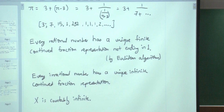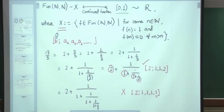Every rational number has a unique finite continued fraction expansion not ending in 1, and every irrational number has a unique infinite continued fraction expansion. We guarantee termination for rationals by the Euclidean algorithm — the denominators are always decreasing in successive steps. And we saw that X is countably infinite. So the map from (0,1) to functions from N to N minus X is both injective and surjective — a bijection. This is how I have proved that this set is in bijection with real numbers.